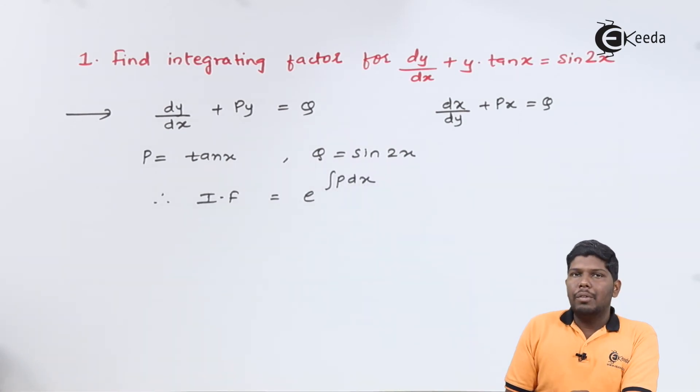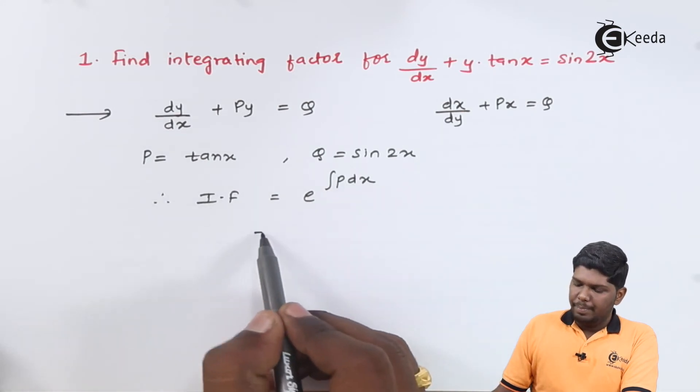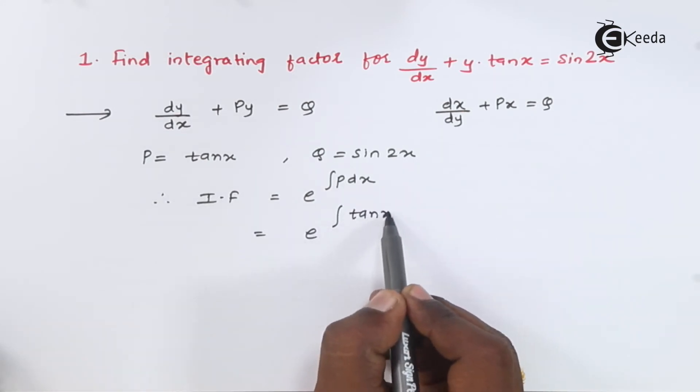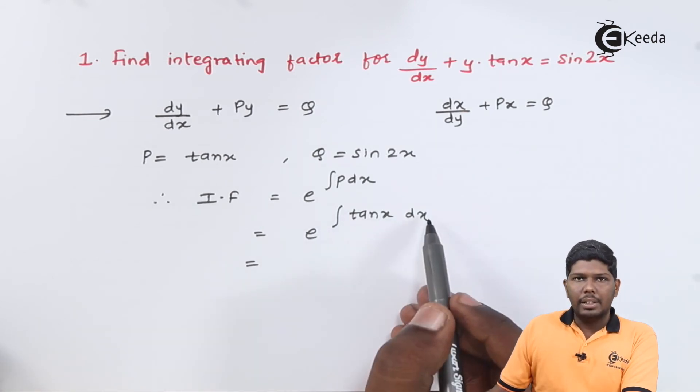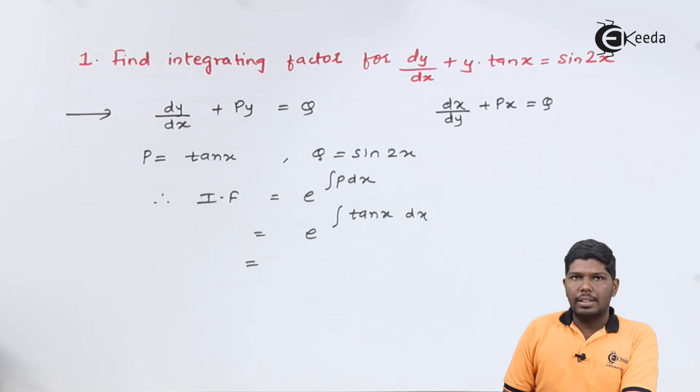Integrating factor is given by the formula e^(∫P dx). So let us substitute the value of P. That will give you e^(∫tan(x) dx). Now, integration of tan(x), we know it is log(sec(x)).